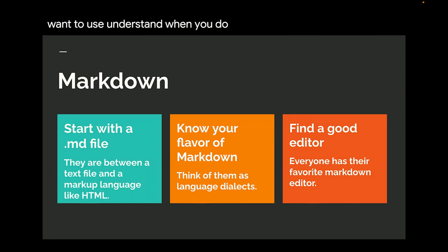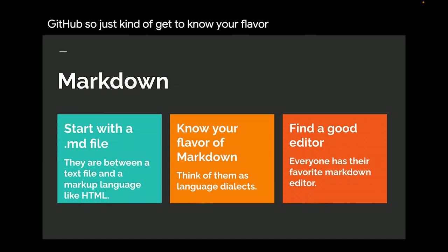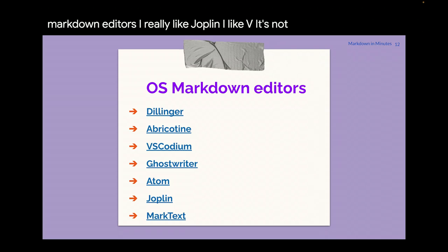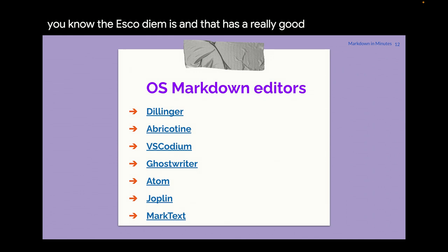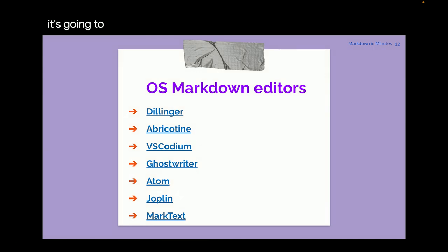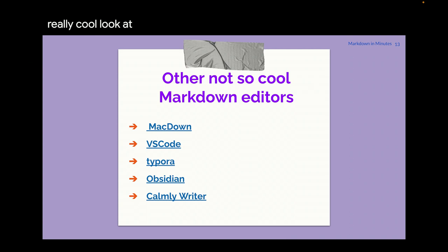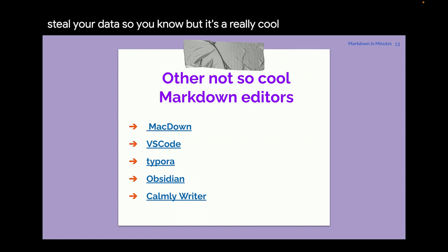Understand when you want to make it portable and why something in GitLab might not render right in GitHub. Then find a good editor — there are all different kinds. I really like Joplin and VS Codium. If you use VS Code, it's not open source, but VS Codium is, and it has a really good split rendering window. Obsidian is cool if you like to link files and it's very dynamic, but it's not open source.